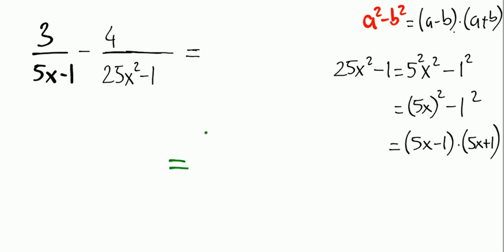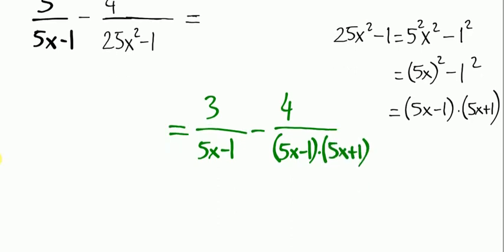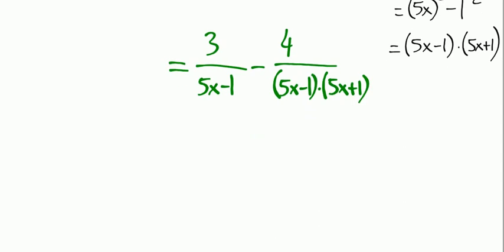Let's go back to the beginning of the question. It was 3 over 5x minus 1, minus 4 over—I'm going to write 25x squared minus 1 as 5x minus 1 times 5x plus 1.